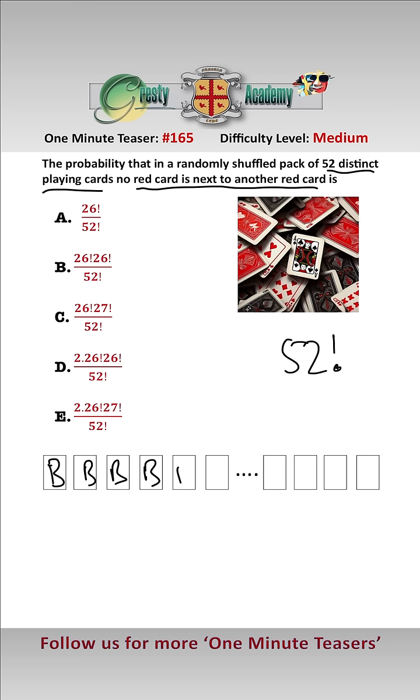Place all of our black cards here like this, and there are 26 factorial ways of doing that. Then what we have to do is there are 27 gaps between the black cards, and we place all of the red cards in those 27 gaps.